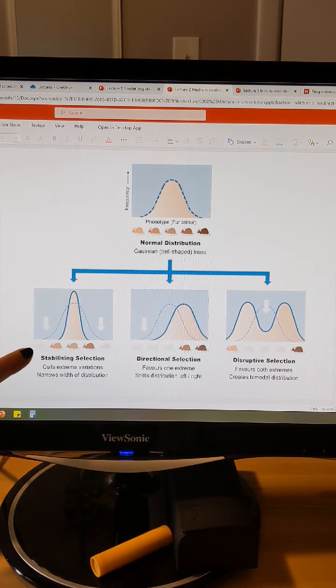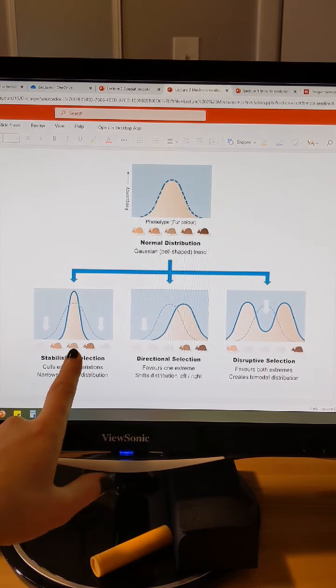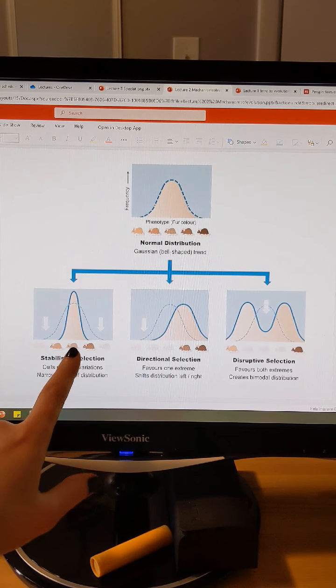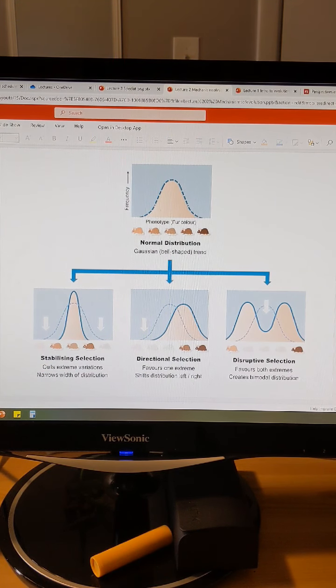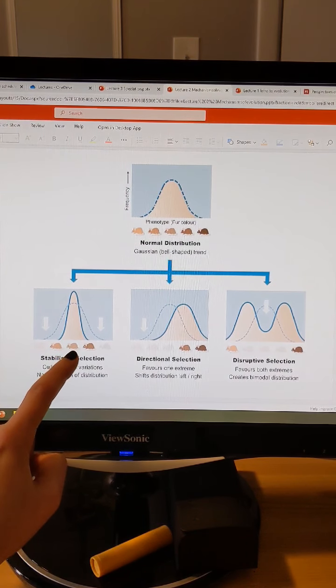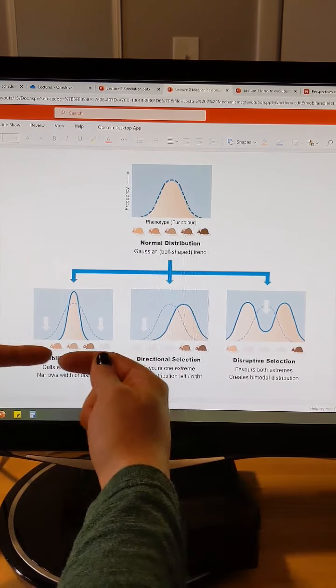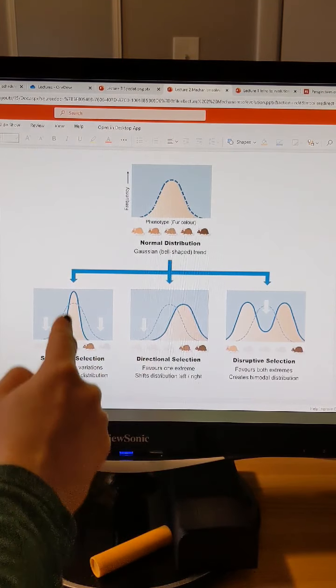In a stabilizing selection event, the mouse that is most desirable is the one with the intermediate phenotype. So the medium colored mouse is the one that reproduces the most. That means that most of the mice babies will have the same phenotype as their dad or their mom. And over time, the population kind of tucks in and it becomes narrower and taller. It stabilizes in the center.